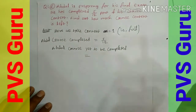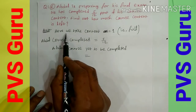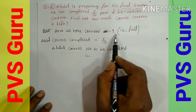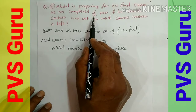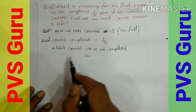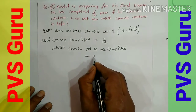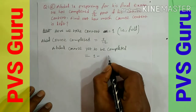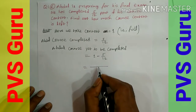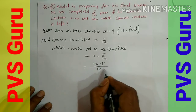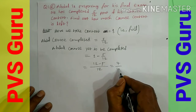The full course content is taken as 1. The course completed by Abdul is 5/12. So course yet to be completed equals full course minus Abdul's completed course: 1 minus 5/12, which is 12/12 minus 5/12, giving 7/12. So 7/12 of the course is yet to be completed.